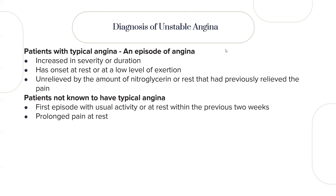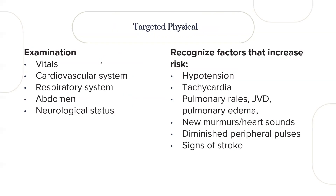For diagnosis of unstable angina: patients with typical angina may show increased severity or duration, onset at rest or low level of exertion, unrelieved by nitroglycerin. Patients without known angina may present with their first episode of chest pain with usual activity or at rest within the previous two weeks, and prolonged pain at rest. During physical examination, take vitals, assess cardiovascular and respiratory systems, and recognize high-risk features such as hypotension, tachycardia, JVD, pulmonary edema, new murmurs, and diminished peripheral pulses.